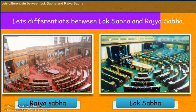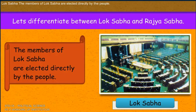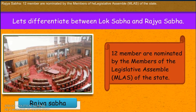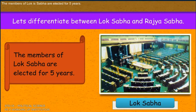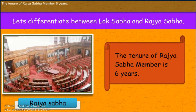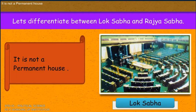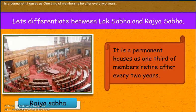Let's differentiate between Lok Sabha and Rajya Sabha. The members of Lok Sabha are elected for five years, whereas the tenure of a Rajya Sabha member is six years. Lok Sabha is not a permanent house. Rajya Sabha is a permanent house; 12 members are nominated and one third of members retire after every two years.